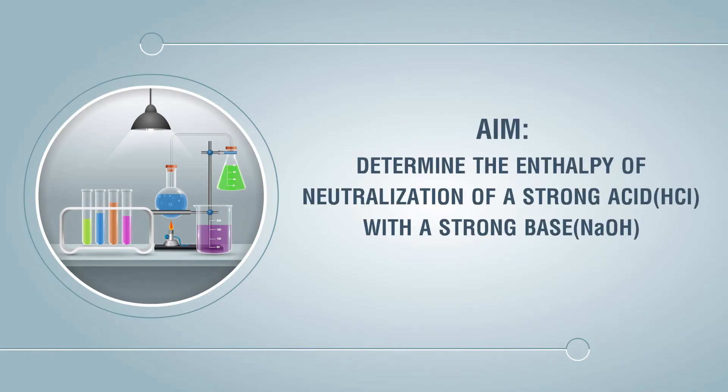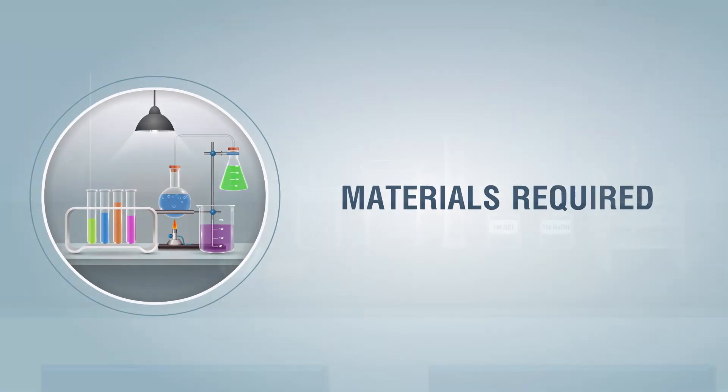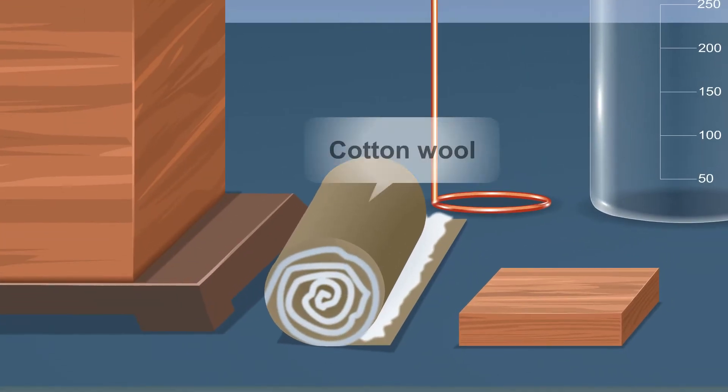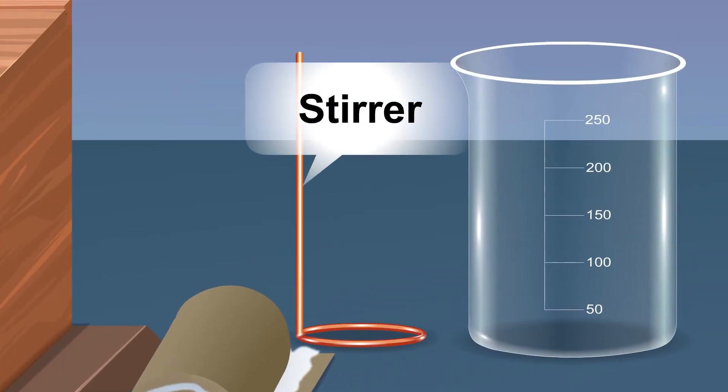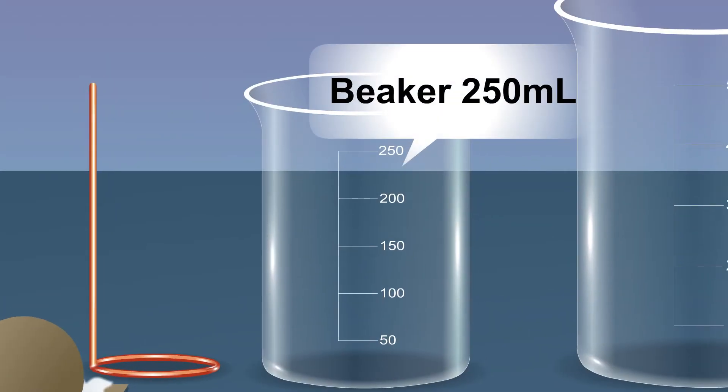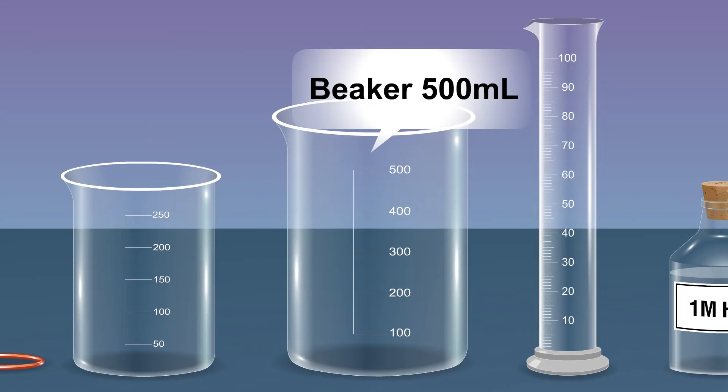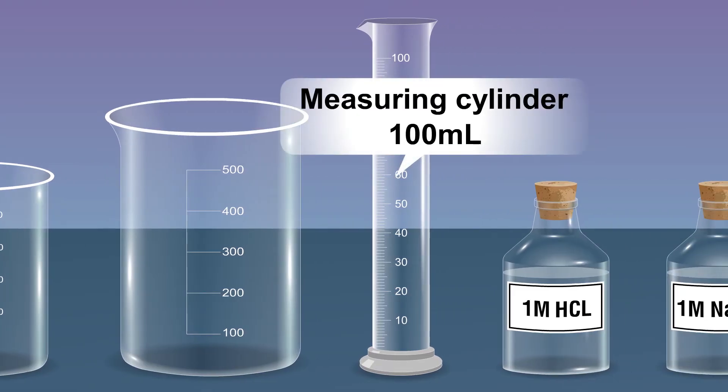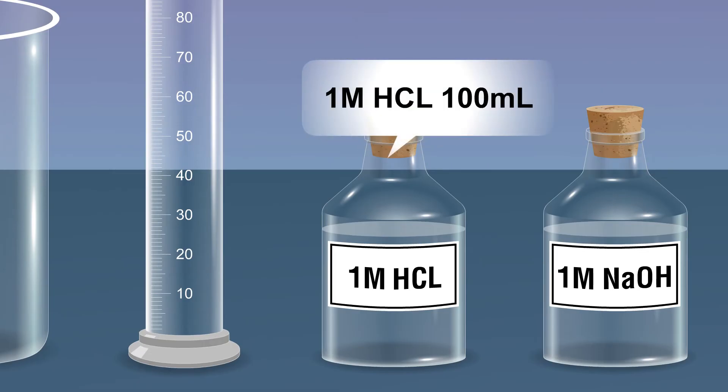Aim: to determine the enthalpy of neutralization of a strong acid HCl with a strong base NaOH. Materials required: laboratory stand, calorimeter, cotton wool, stirrer, small wooden block, beaker 250 milliliters, beaker 500 milliliters, measuring cylinder 100 milliliters, 1M HCl.